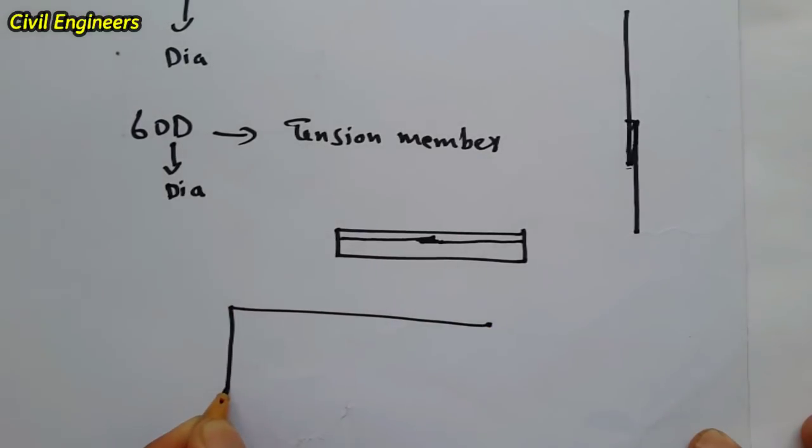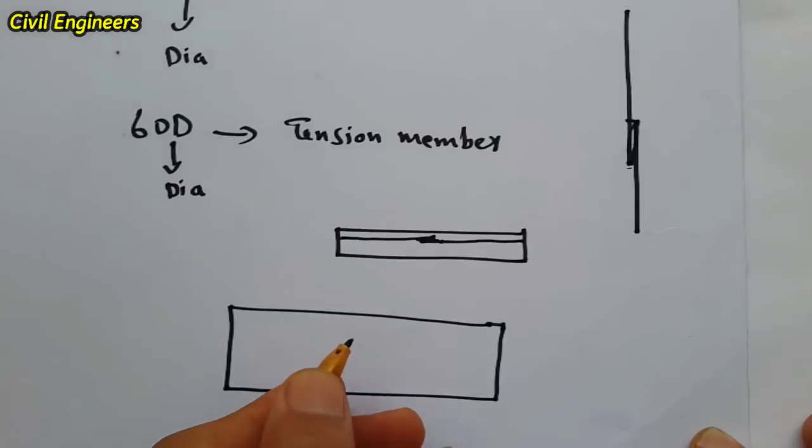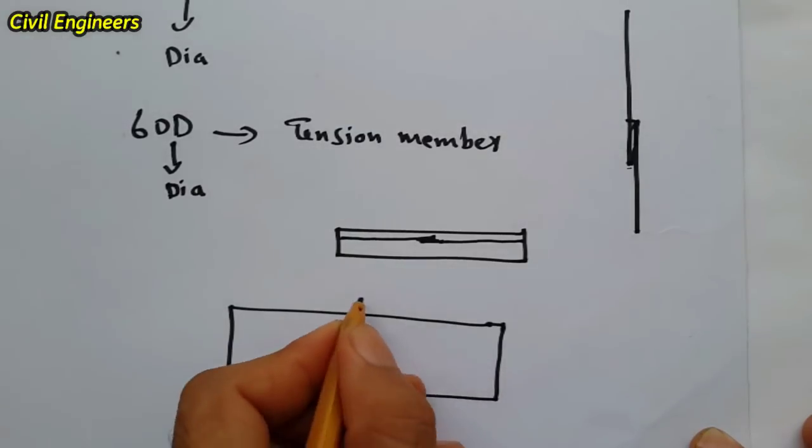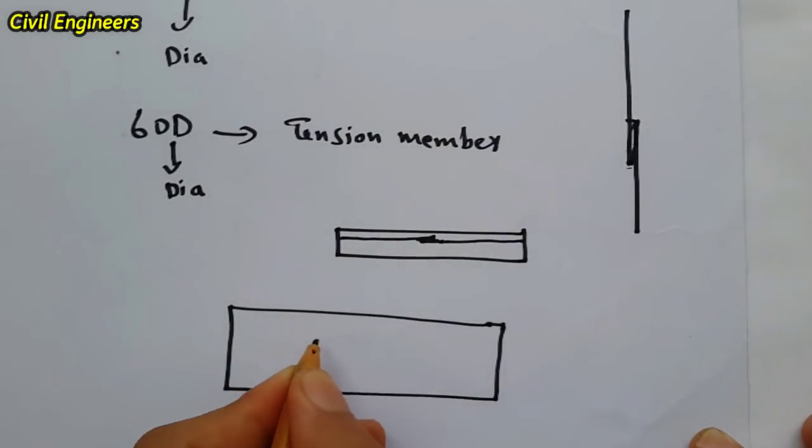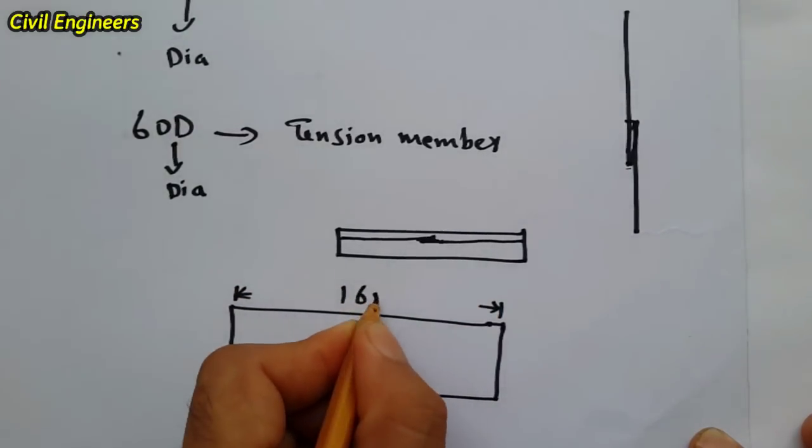Suppose we have a slab which length is 16 meters. This is the slab and the length of the slab is 16 meter.